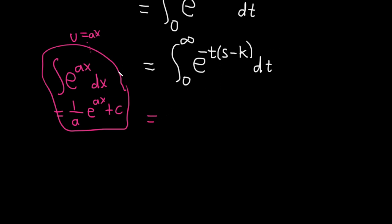Here, our constant, our a, in this example, would be negative s minus k. So this is basically 1 over negative s minus k, and then we just have e to the negative t, s minus k. This is the easiest way to do it. I mean, you can go to the side and convince yourself, call this whole piece here u. This is the answer that you will get, and then we're going from zero to infinity.